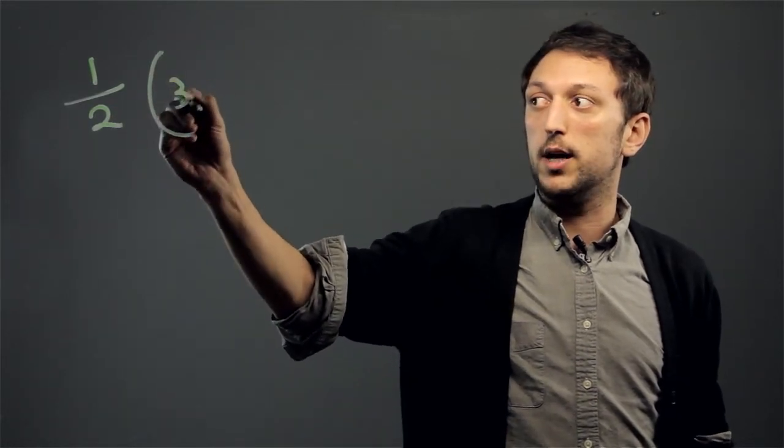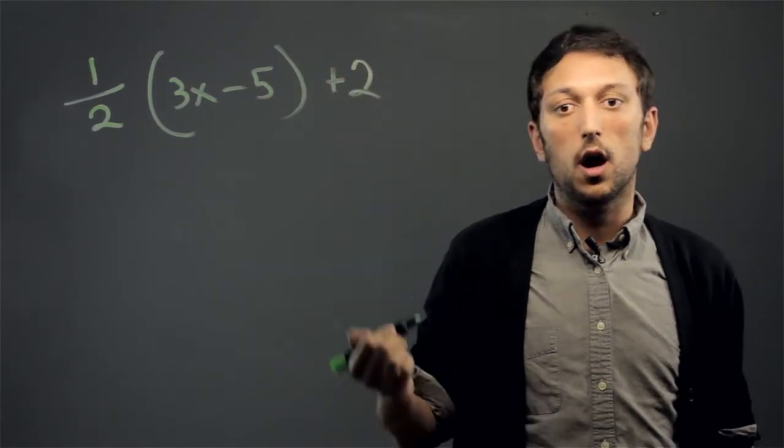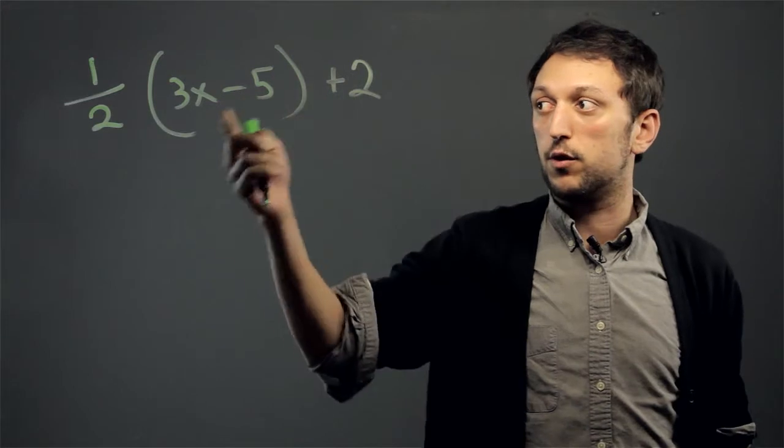We have 1 over 2, parentheses, 3x minus 5 plus 2. So to get past this step, we're going to have to deal with this denominator when we distribute.